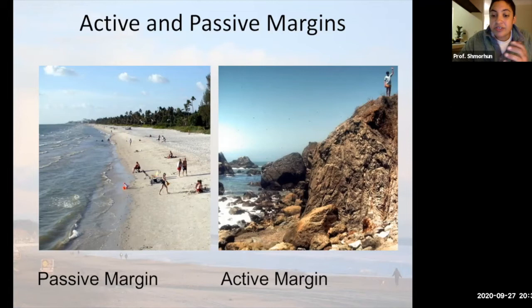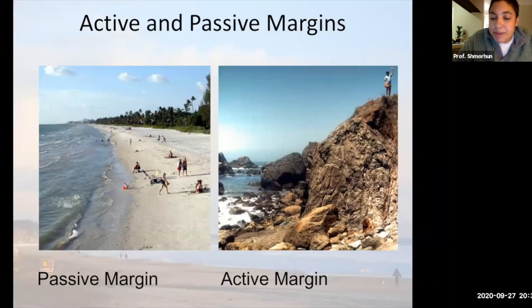Conversely, on an active margin, there is active tectonism occurring — generally in a subduction zone. On these active margins, you are going to get more steep and cliff-like terrain, where you have rock exposures for a majority of that margin and boundary. So those are the two main different styles of beaches.